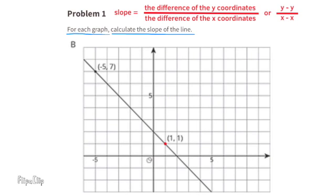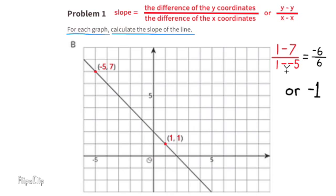Graph B. Let's put a point for the coordinates 1, 1, and a point for the coordinates negative 5, 7. y minus y, that would be 1 minus 7, over x minus x, that would be 1 minus negative 5. 1 minus 7 is negative 6, and 1 minus negative 5 is the same thing as 1 plus 5, which is 6. So the slope of this line is negative 6 over 6, which is the same thing as negative 1.